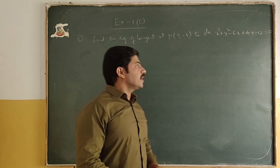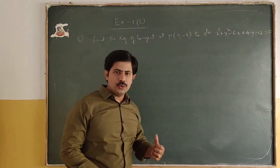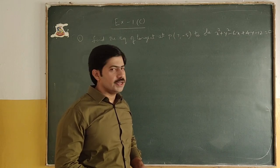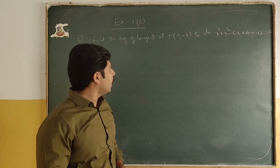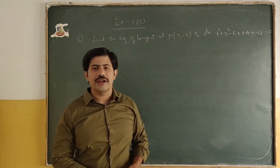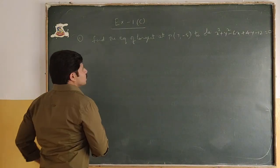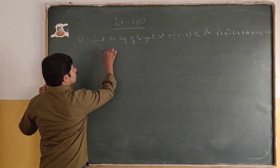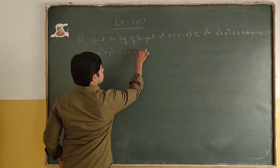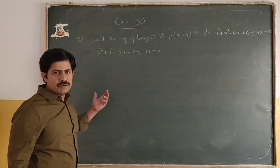Inside 1C, first problem: find the equation of tangent to the circle x² + y² - 6x + 4y - 12 = 0 at the point (7, -5). Here we have to find out the equation of tangent. The equation of circle is x² + y² - 6x + 4y - 12 = 0.